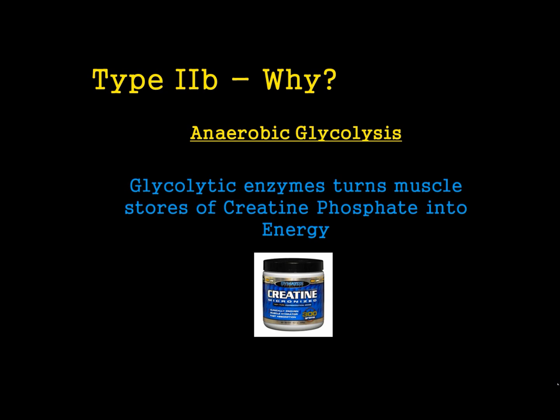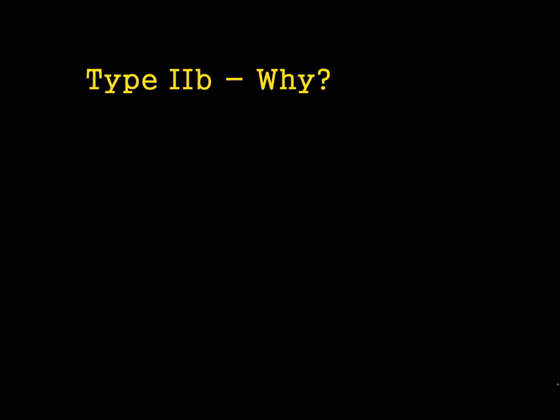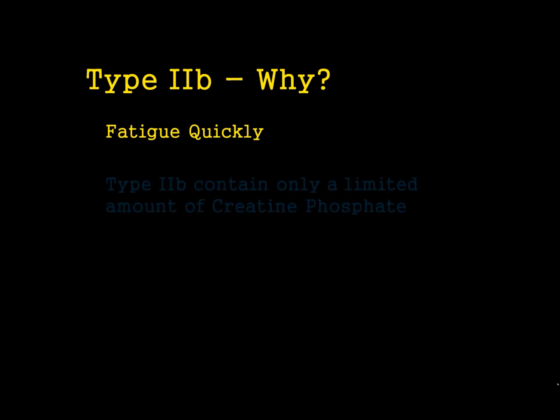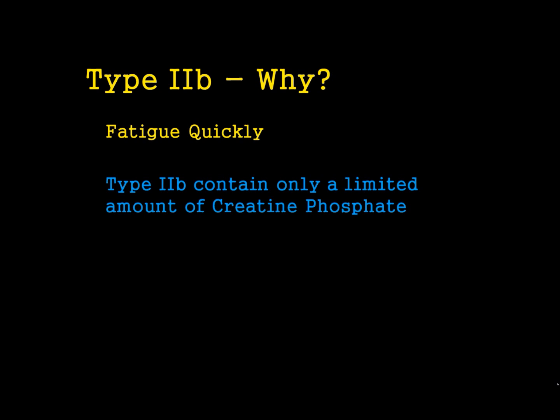You might have heard of creatine before — this is a supplement that some people use to boost their stores of creatine phosphate. The problem with Type 2B fibres is that they fatigue very quickly. We only have a limited store of creatine phosphate in our body, and when that runs out we're no longer able to use those particular muscle fibres. So some people take creatine as a supplement to boost their stores of creatine phosphate, and therefore they can use their Type 2B muscle fibres more.